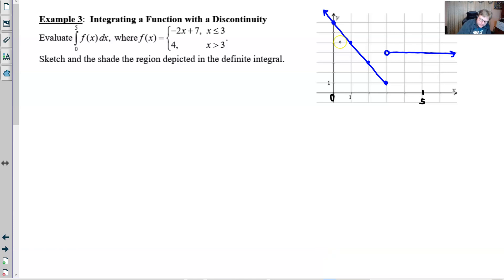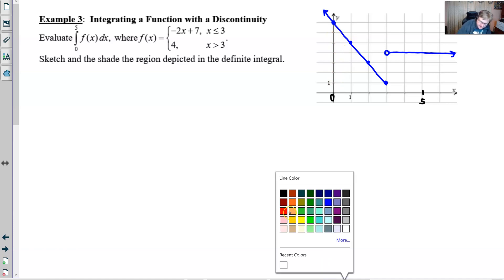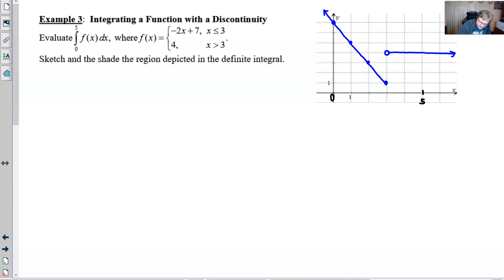You just have to take it one section at a time. So if we look at the first area, that would be what exists. Let's draw this a little bit better. We're going to have this particular region here.